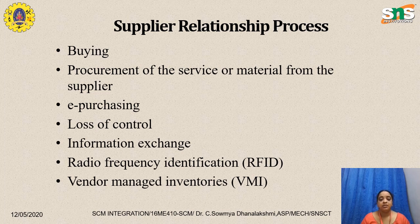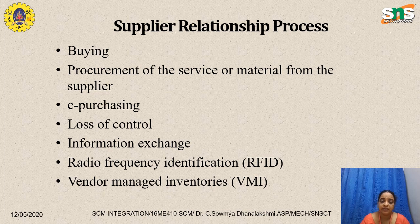The supplier relationship process involves balancing buying and procurement of services or materials from the supplier. In some cases e-purchasing can be done, and information exchange via RFID is used. As discussed in logistics case studies, radio frequency identification and vendor-managed inventories are two tracking methodologies used to track where a product is available.